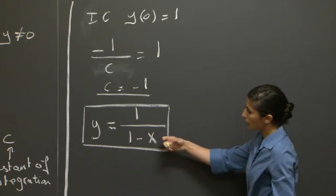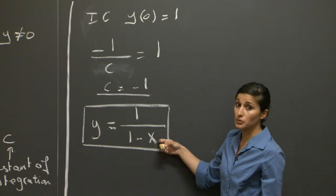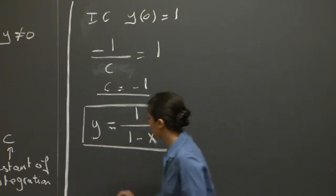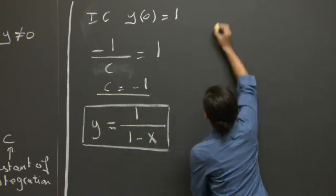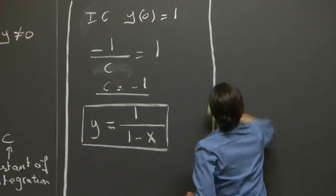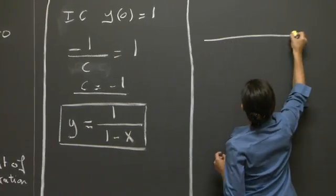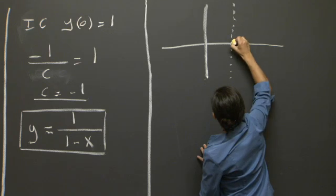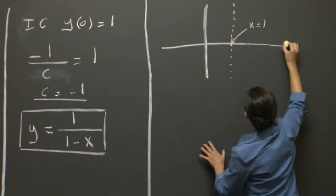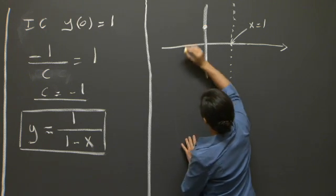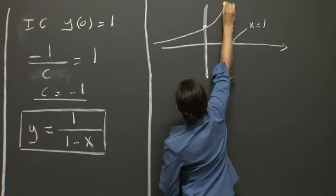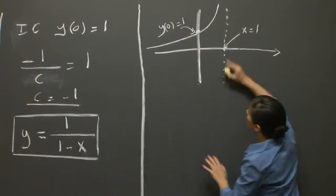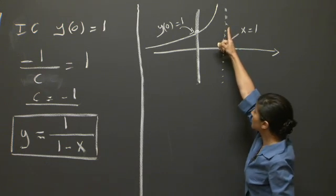If you examine this expression, you see right away that we have a problem for x equals 1. Because at x equals 1, we have 1 over 0, which means that the solution blows up, and we have a vertical asymptote. So let me draw this here. We're going to have an asymptote on x equals 1, and a solution that passes through our initial condition, y equals 1, going to infinity when approaching x equals 1.